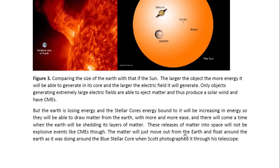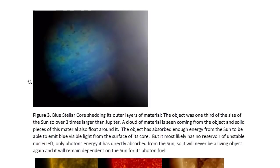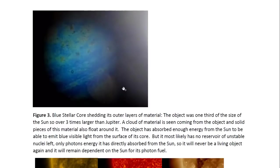The matter will just move out from the Earth and float around the Earth, as it was doing around the blue stellicle when Scott photographed it through his telescope. Here we see one of these photographs that Scott took through his telescope last year of this blue object. This object was shedding its outer layers of material, and this material was forming the stripes that the object had. The object was one-third of the size of the sun, so over three times larger than Jupiter. A cloud of material is seen here coming from the object.